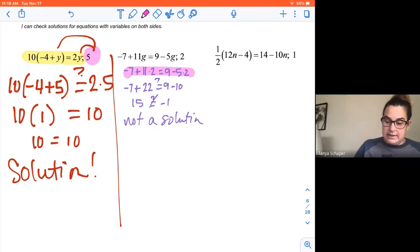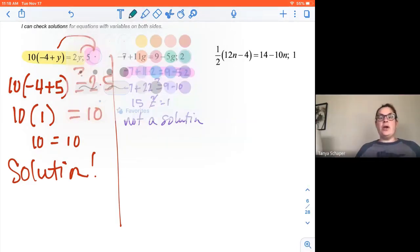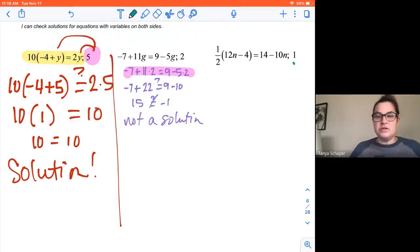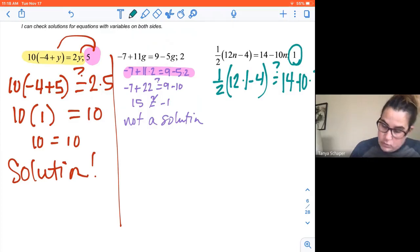Let's try this last one. And then we're going to get into solving equations with variables on both sides. We think that the solution is one. So we're going to check to see if that's right. Is one half times the quantity 12 times 1 minus 4 the same as 14 minus 10 times 1?